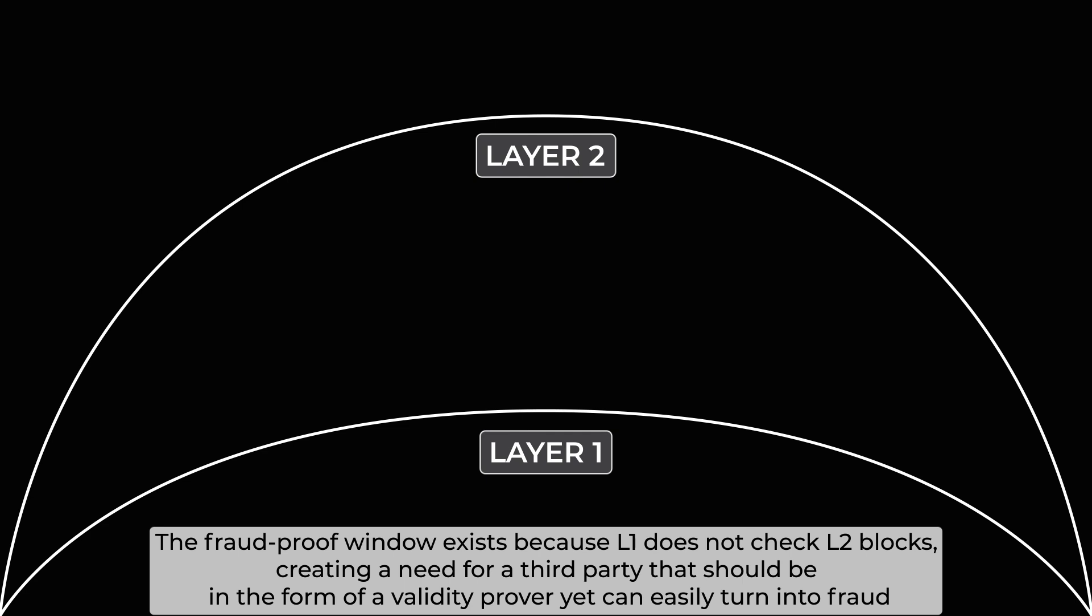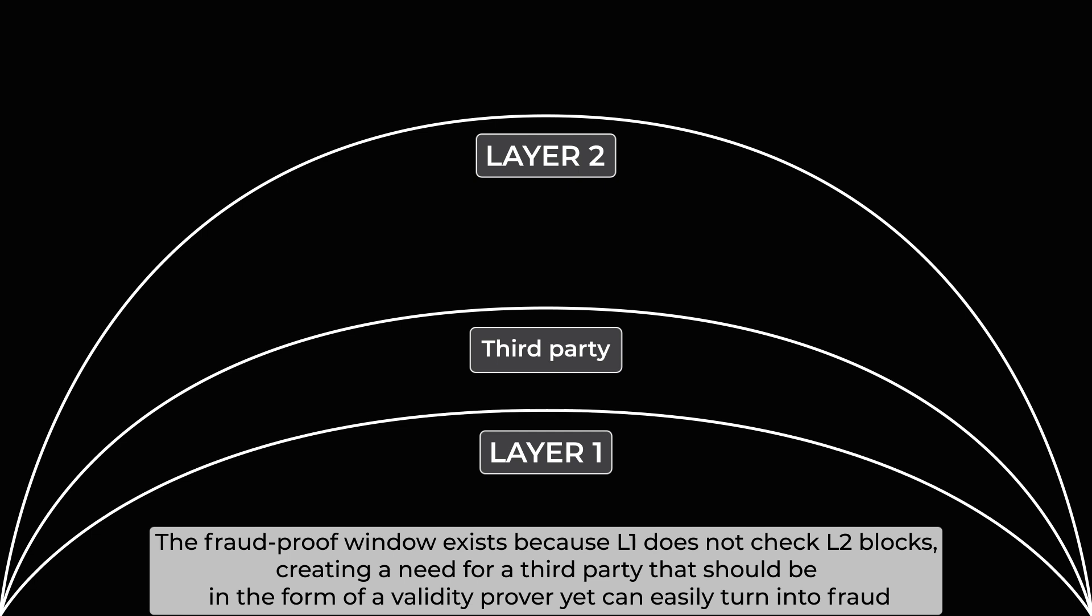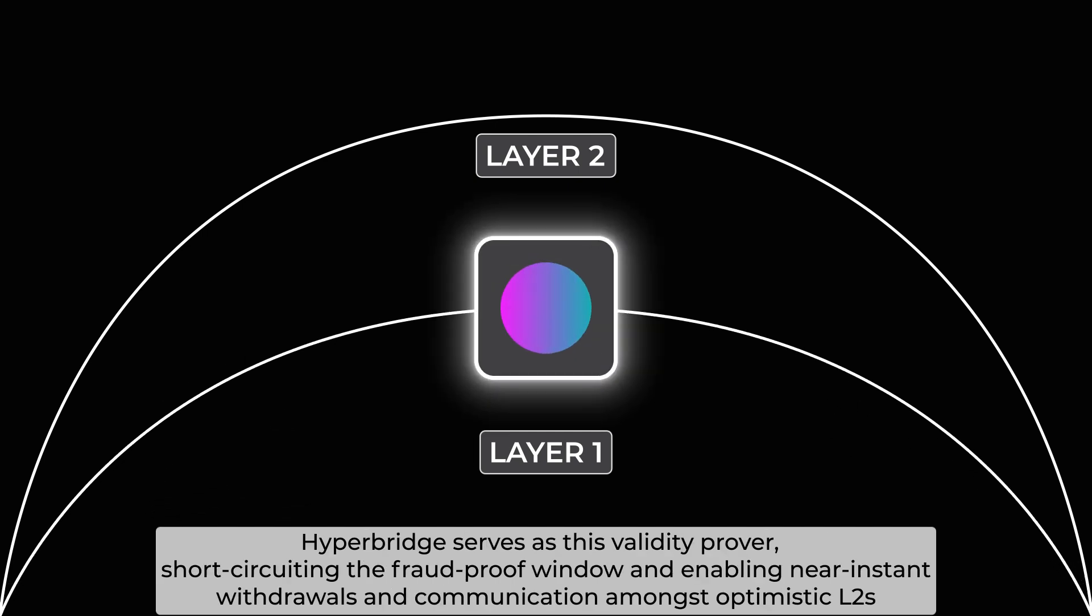The fraud-proof window exists because layer 1 does not check layer 2 blocks, creating a need for a third party that should be in the form of a validity prover, yet can easily turn into fraud. Hyperbridge serves as this validity prover, short-circuiting the fraud-proof window and enabling near-instant withdrawals and communication amongst optimistic layer 2s.